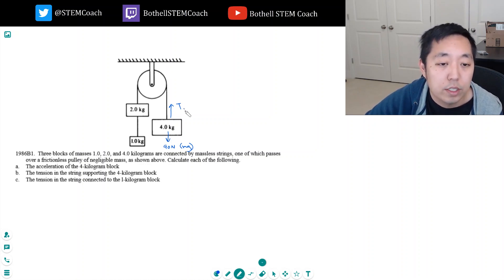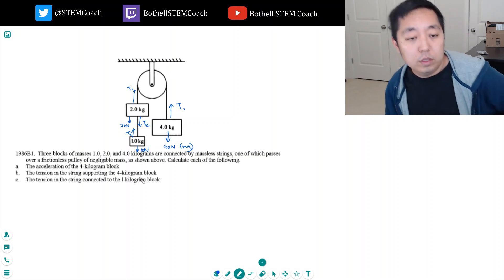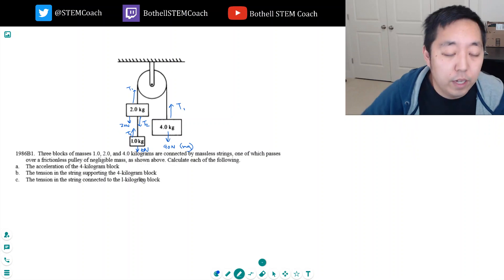I'm going to call this T1 by the way, because these two strings might have different tension. This guy has T1 acting on it. He has 20 newtons from his weight and then he has T2 also acting on it. This guy only has T2 pulling him up and then 10 newtons going down. So this is kind of the setup here.